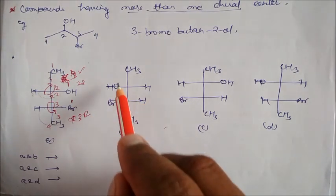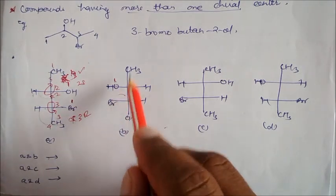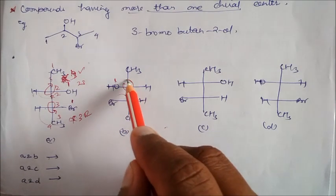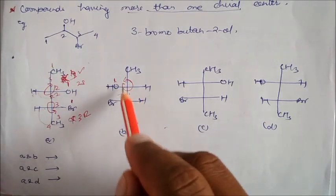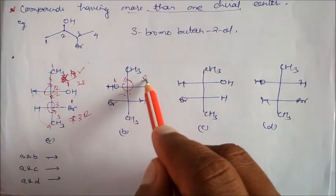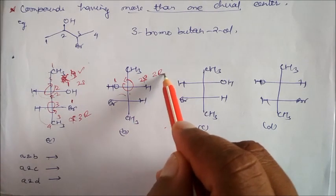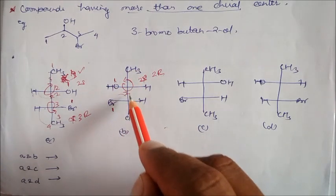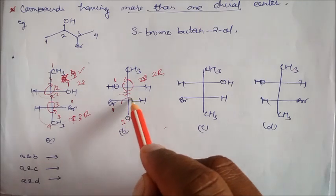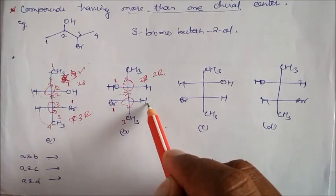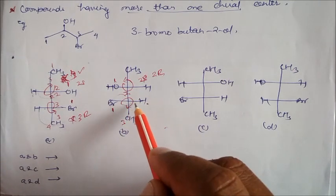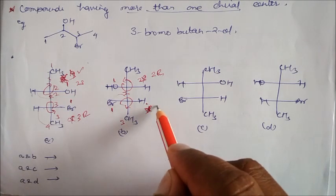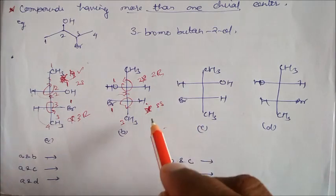Here, if you see: this is the 1, the whole group is 2, this is 3. Again hydrogen is on the horizontal line. So it is looking like your 1, 2, 3 — looking like S anticlockwise. So this is not S; this will be your 2R. Similarly, this is Br as 1, this whole group is your 2, and this is your 3. Hydrogen in the fourth group is on the horizontal line. So 1, 2, 3 — it is looking like R, but this is not R — not 3R — this will be your 3S. So compound 2 is 2R and 3S.